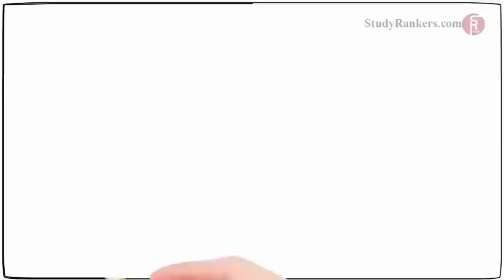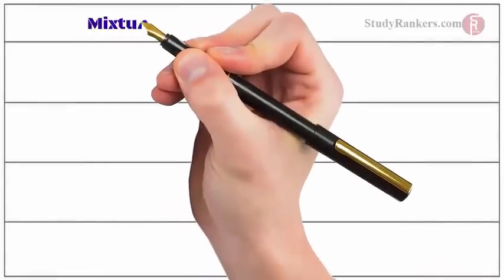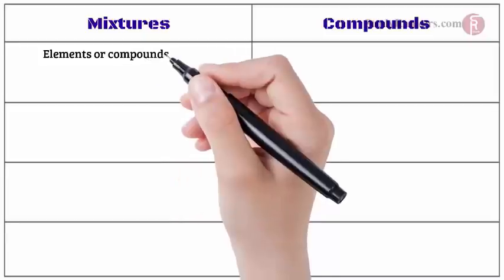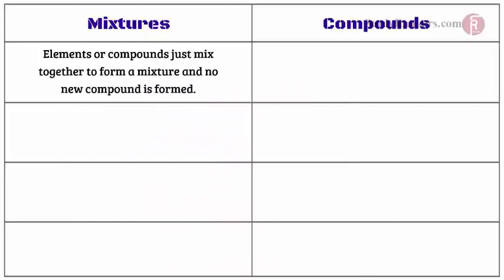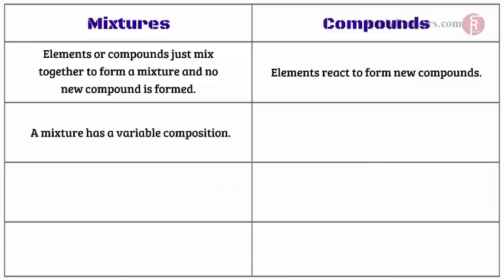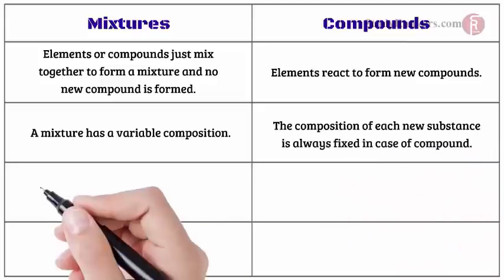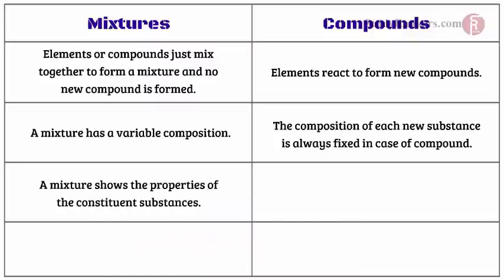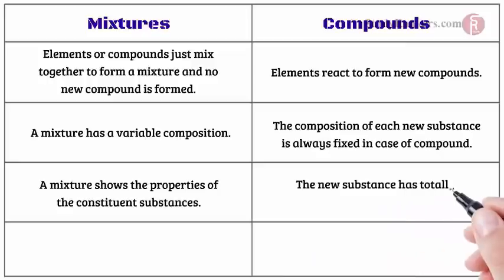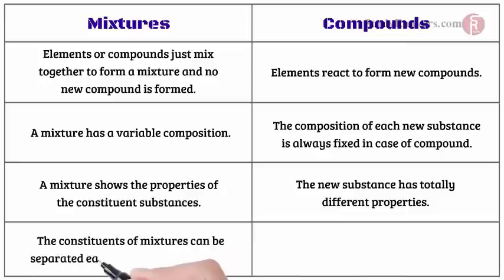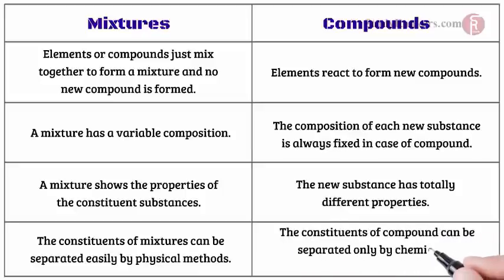Now we will differentiate between mixtures and compounds. In a mixture, elements or compounds are just mixed together and no new compound is formed, while in a compound, elements react to form new compounds. A mixture has a variable composition, but the composition of each compound is always fixed. A mixture shows the properties of the constituent substances, while in a compound the new substance has totally different properties. The constituents of a mixture can be separated easily by physical methods, while the constituents of a compound can be separated only by chemical or electrochemical reactions.